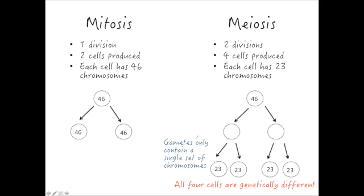Importantly, the whole point of meiosis is that all four cells produced are genetically different. Each sperm cell or egg cell that you make is genetically different from the next. That's why we get so much variation in how we all look — because the genes in the sperm and egg cells are all a completely different mix, unless of course you're an identical twin.